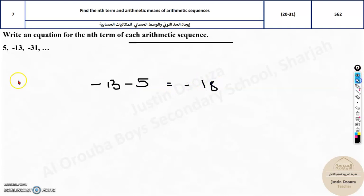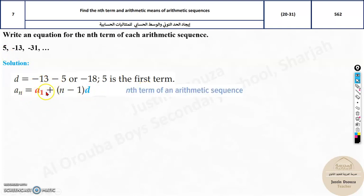That's it. So this must be added everywhere. Now, you can see the d is negative 18. What is the first term? 5. Why do we need this? Because we have to put it in the formula.